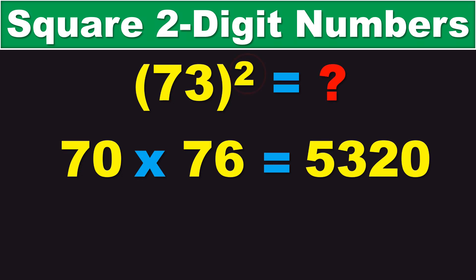And, the final step is to add the square of the last digit of the original number. So, the last digit of the original number, 73, is 3. And, 3 squared is 9.